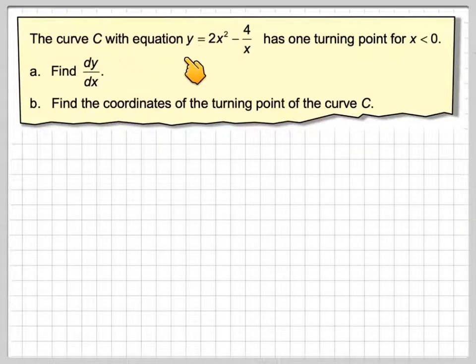The curve C with equation y equals 2x squared minus 4 over x has one turning point for x less than 0, so negative x. Find dy/dx and find the coordinates of the turning point of curve C.